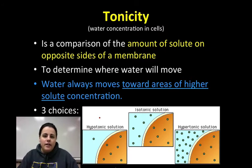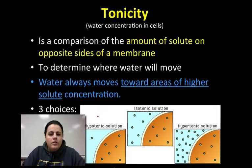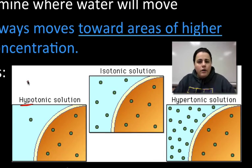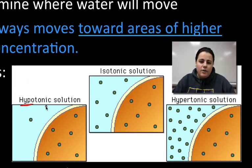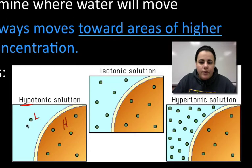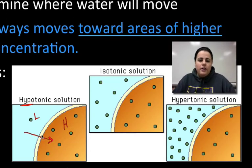There are three scenarios that cause water to move. The first one is called hypotonic. Water likes to osmose to an area of high solute concentration. The green dots are the solute. The inside of this orange cell has a higher concentration, so here's a high concentration of solute and here's a low concentration of solute. Water is going to move to where there's more solute, so in this scenario, water moves into the cell.